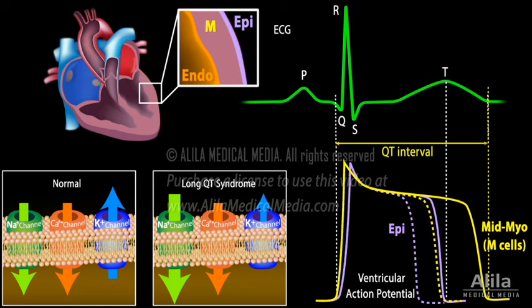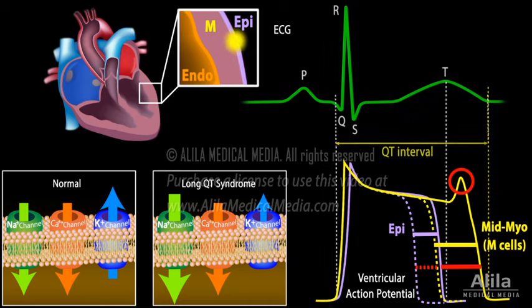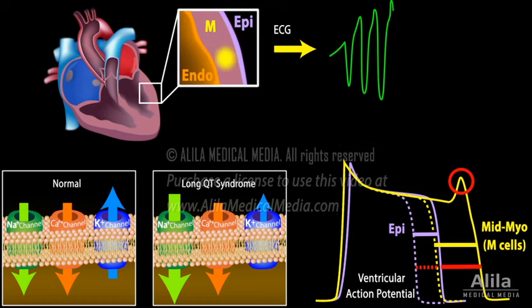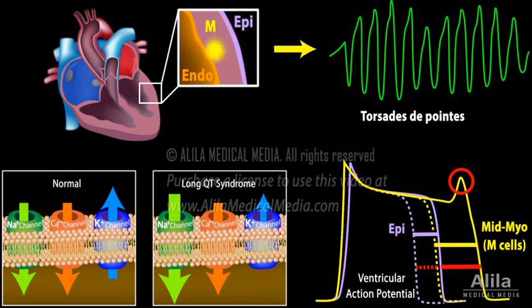If inward currents exceed outward currents during the plateau phase, early after depolarizations and consequently extra heartbeats can be triggered. Mutations in ion channels also disproportionately lengthen action potentials in M cells, increasing the difference in refractoriness of the different layers. This can cause electrical impulses to travel around in loops, known as re-entrant pathways, producing the characteristic wave pattern of torsade de pointe.